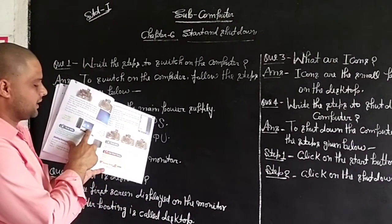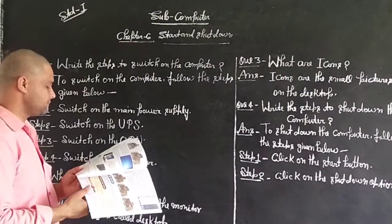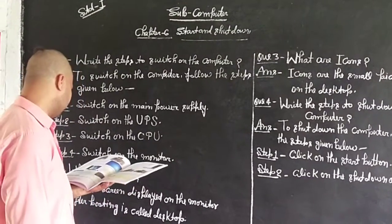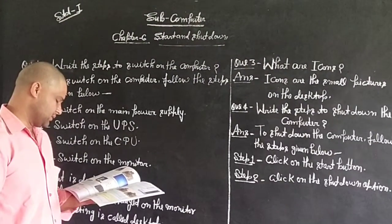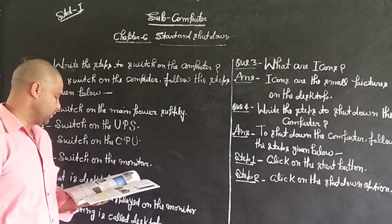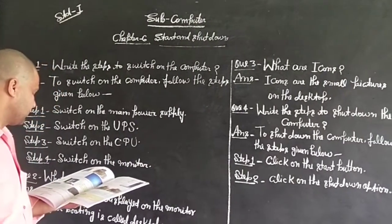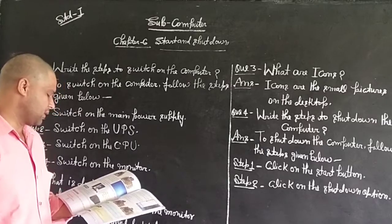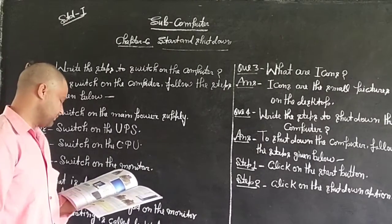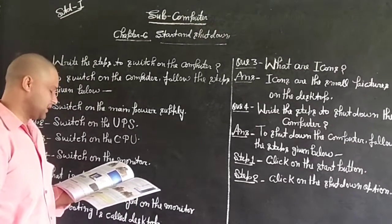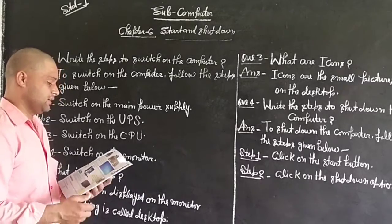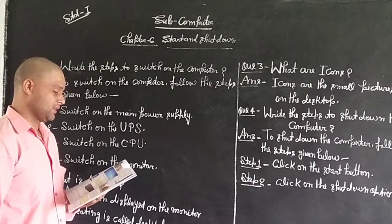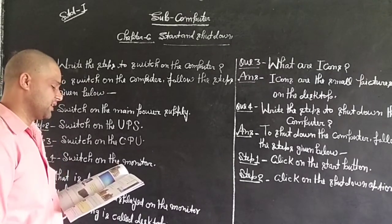When you start the computer, follow the steps. Click on the start button, on the shutdown option. The UPS provides power backup for the computer. It keeps the computer on for some time even when the lights go. If you do not shut down the computer properly, you may lose the working data.